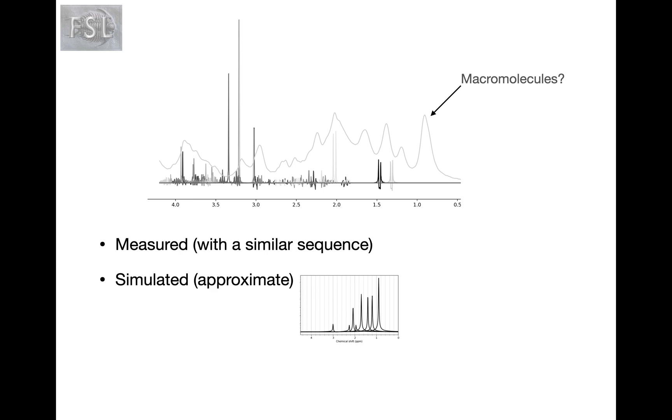Although most of these basis spectra look like isolated peaks or doublets or triplets, one of them stands out as consisting of very broad peaks throughout. And this is the macromolecules spectrum. And this one is generally not simulated using the density matrix simulator, but rather either measured with a sequence that's very similar to the one used for the metabolites, or simulated using a simple combination of relatively broad peaks at predefined relative frequencies and predefined relative amplitudes.